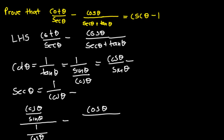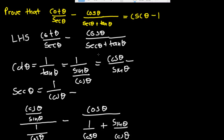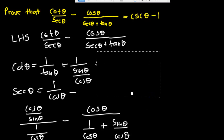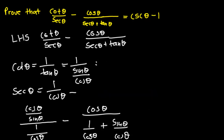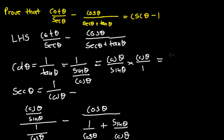Then sec theta is 1 over cos theta, and tan theta is sine theta over cos theta. From here we can turn the fraction upside down, so we are going to have cos theta over sine theta times cos theta over 1, which gives us cos squared theta over sine theta.